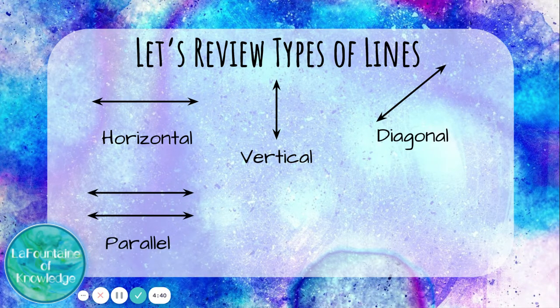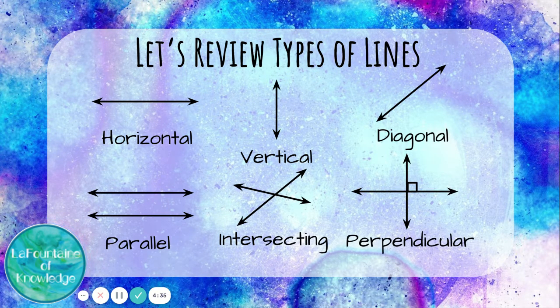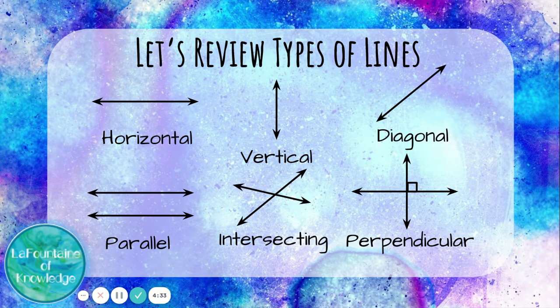Parallel lines, intersecting lines, and perpendicular lines. These are ways to describe how a line is positioned in relation to another line.